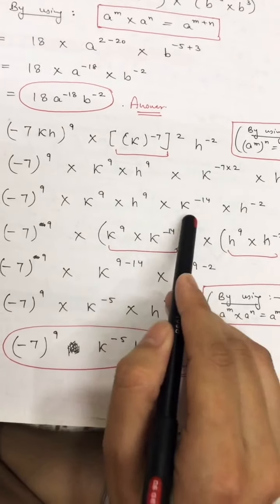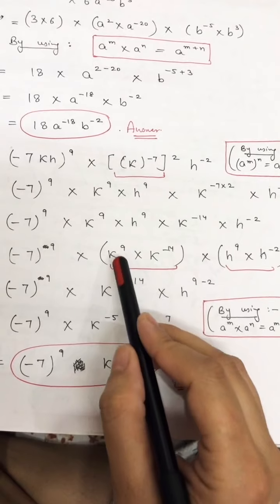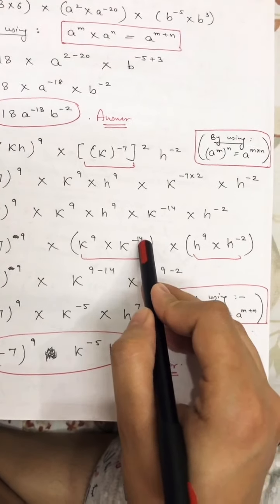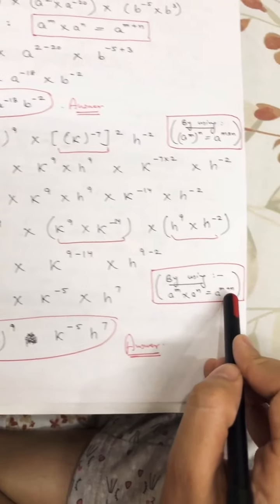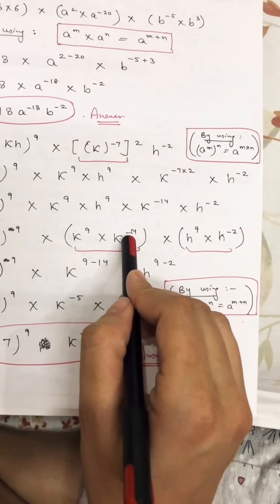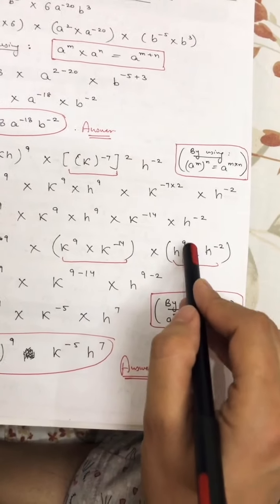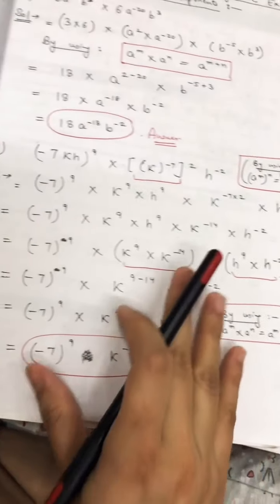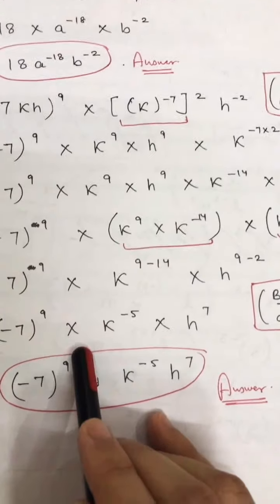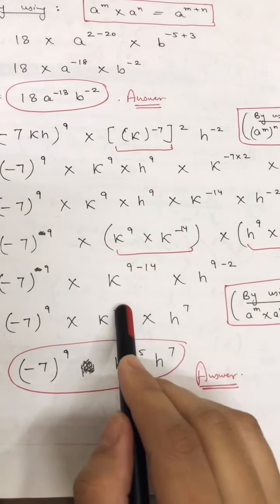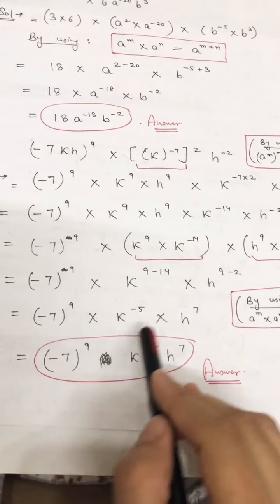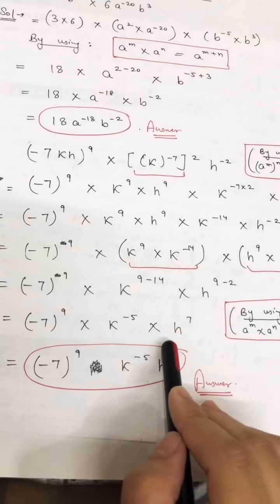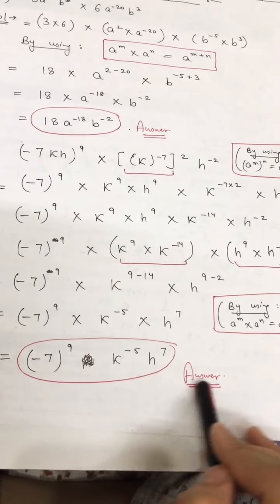Write same variables together: k raised to power 9 and k raised to power minus 14, and h raised to power 9 and h raised to power minus 2. Applying the multiplication law: k raised to power 9 plus minus 14 gives k raised to power minus 5, and h raised to power 9 minus 2 gives h raised to power 7. The constant minus 7 raised to power 9 remains. You can remove the multiplication sign from the final answer.